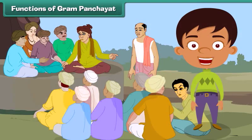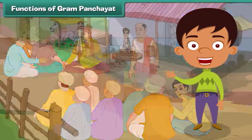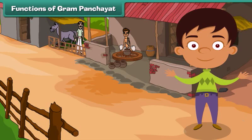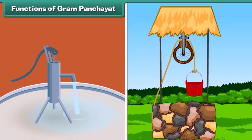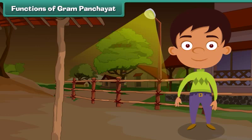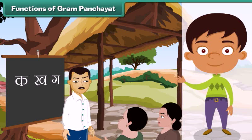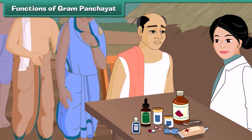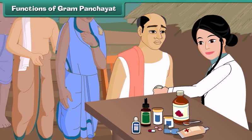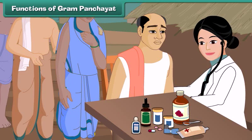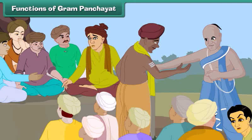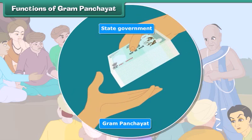The gram panchayat looks after the cleanliness of the village and takes care of the water supply. It maintains roads, streets, and proper lighting in the village. It makes arrangements for the education of children and adults. The gram panchayat provides facilities for maintaining public health and hygiene and organizes health programs for its people. It also maintains law and order in the village. For performing all these functions, the gram panchayat receives funds from the state government.